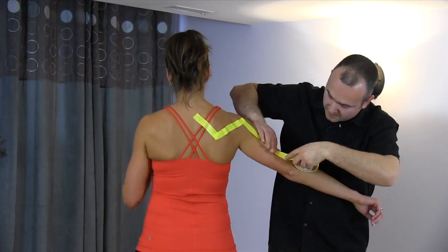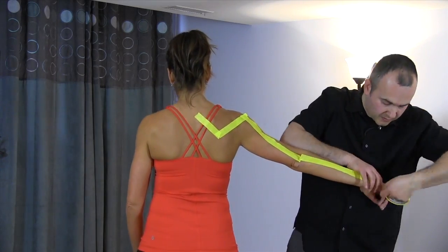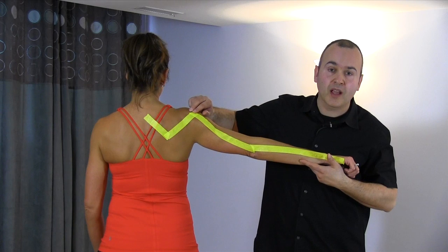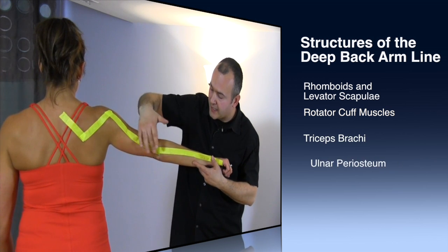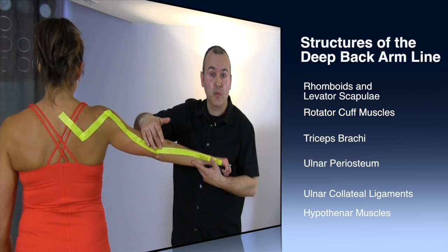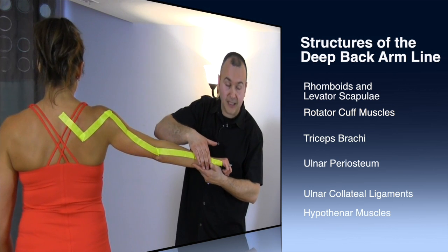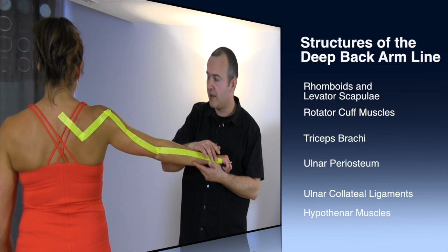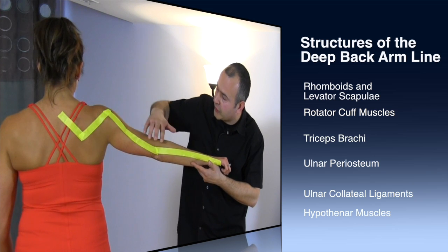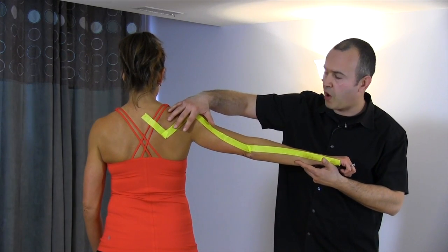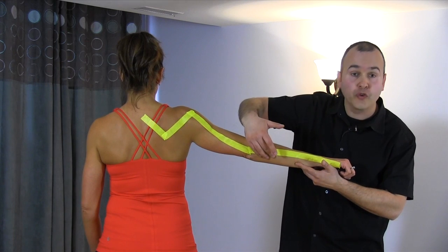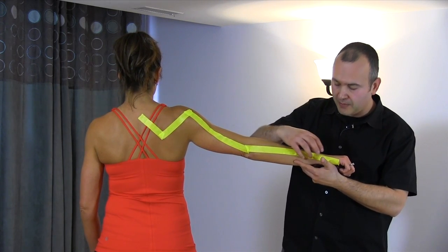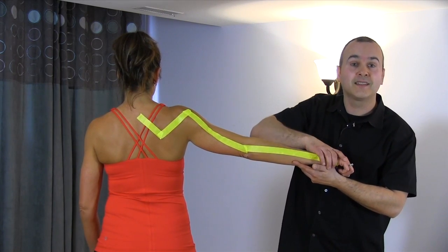Now we'll be taping the deep back arm line and the superficial back arm line. Now that we've got the deep back arm line taped, you can see how it starts right off the spine, through the rhomboids, into the rotator cuff, and then down through the triceps, the lateral epicondyle — which is the spot where people come in with tennis elbow — through the ulna and the collateral ligaments of the ulna, right into the thenar muscles on the side of the hand. Shoulder problems can be related to lateral epicondylitis, and tingling or numbness in this area can be affected by nerve entrapment within the fascia or as it leads into the muscles of the hand.